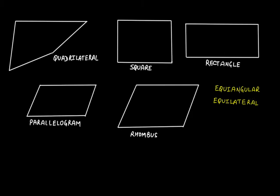In this quadrilateral we can really see that not all sides are equal — it's a simple quadrilateral. So this is not a regular polygon; it is an irregular polygon.